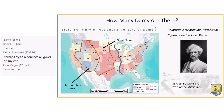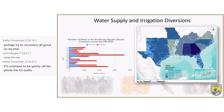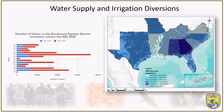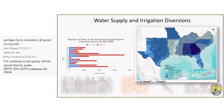One way we address this is figuring out how many undocumented dams there are. Even though we have the national inventory, it does not document everything. Looking at the Southeast Aquatic Resource Partnership's efforts over the past decade, the graph shows national inventory dams in blue versus what aquatic teams have been documenting in red — and you can see there are a lot of undocumented dams out there for water supply and irrigation. We expect this or more across the western regions we work in, and we are actively trying to document these as we go along, but it's a long process.